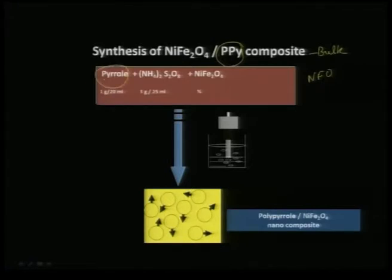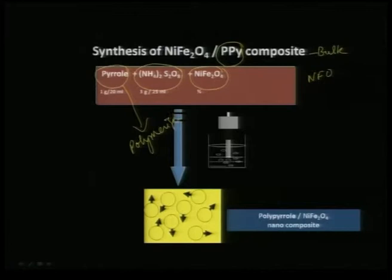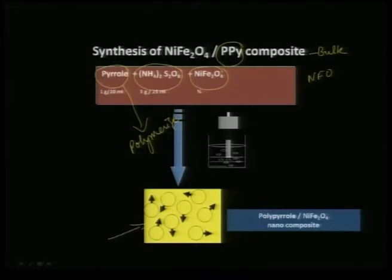In this case, you take pyrrole and polymerize it in situ with suspended nickel ferrite particles. As the pyrrole is getting polymerized, the nickel ferrite particles are coated intimately by polypyrrole, and as a result you get a conducting matrix. The moments are actually aligned randomly and you have the polypyrrole matrix holding all the nickel ferrite clusters.